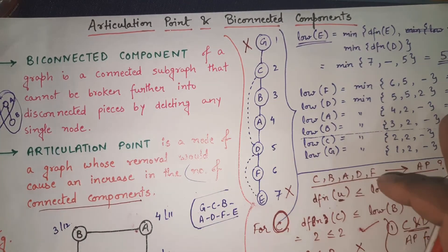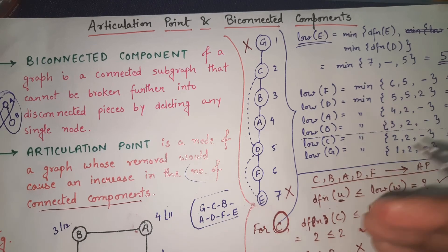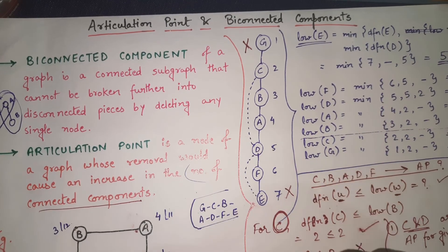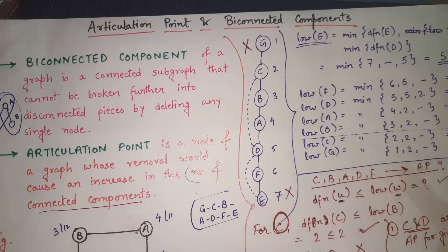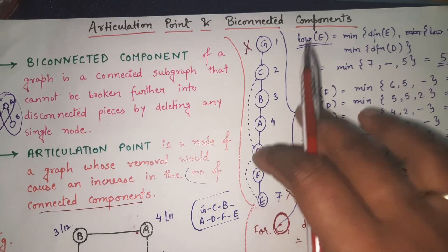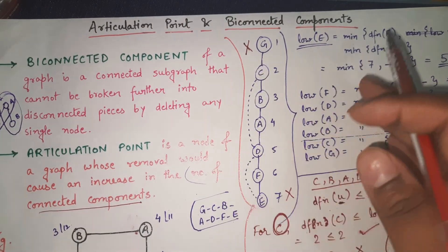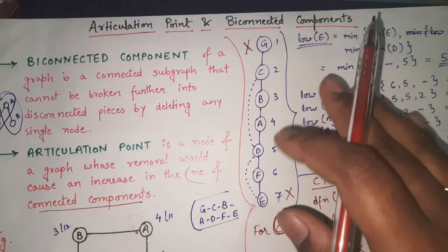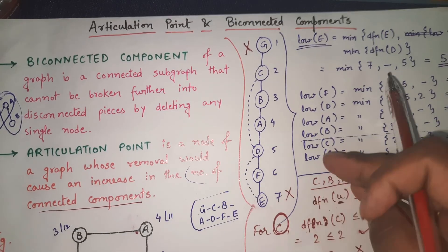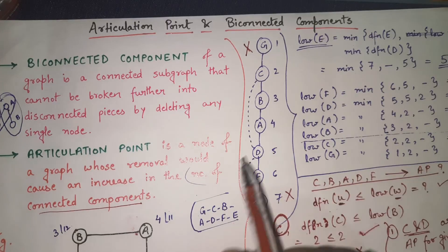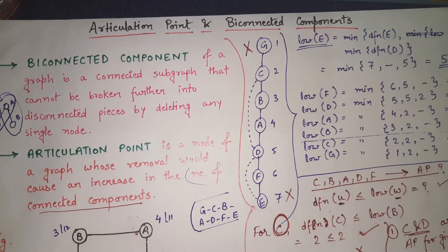I hope you will now be able to find biconnected components and articulation points for any given graph. If you need one more example, I will try to make another video for the same topic using a different graph with a slightly different approach. If you have any doubt or want to learn a particular concept, feel free to reach out or comment. If you are new, please subscribe, like the video, and share it with your friends. Thank you so much.